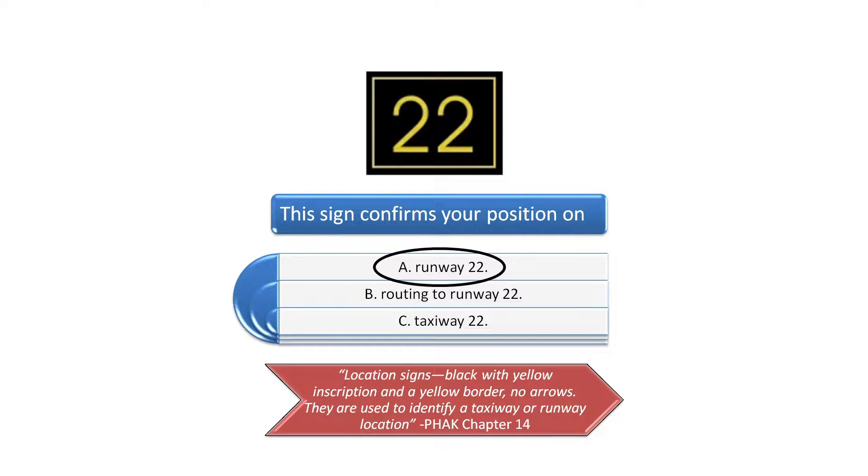Location signs are used to identify taxiway and runway locations. See Chapter 14 of the Pilot's Handbook of Aeronautical Knowledge or watch our previous video on how to read airport signs and markings for more information on airport signs and markings. The correct answer is A.